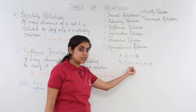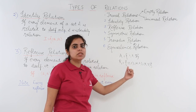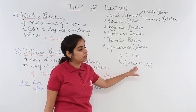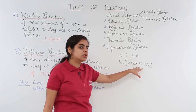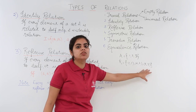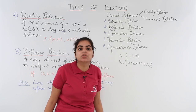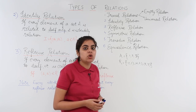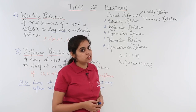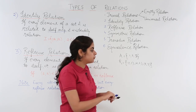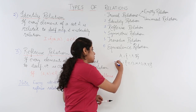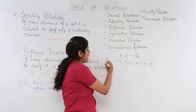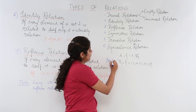Every element you can see is related to itself only: 1 is related to 1 only, 2 is related to 2 only, 3 is related to 3 only. Hence, by the definition of identity relation which we studied, this relation R1 is an example of identity relation.